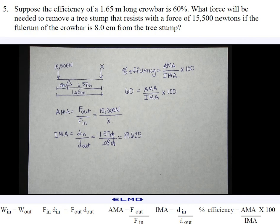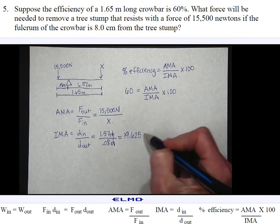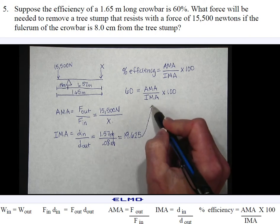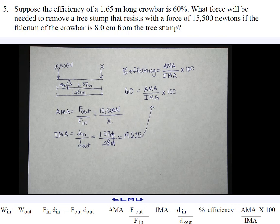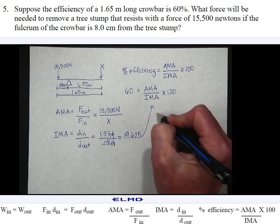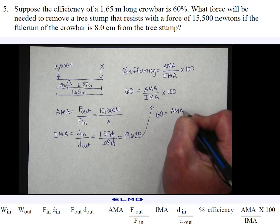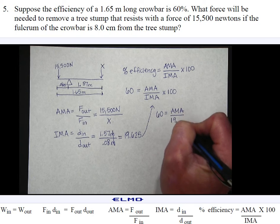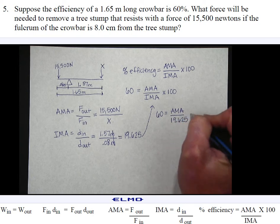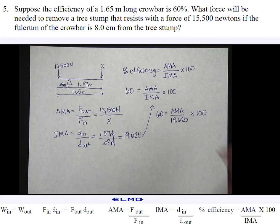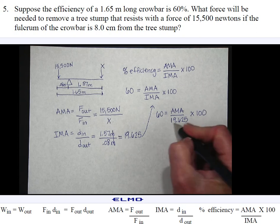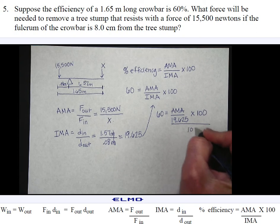Since this is a number that I know, I'm going to plug it in to my formula up here for IMA. So that leads me to 60 equals AMA divided by 19.625 times 100. I'm going to work to solve this for AMA. So to undo times 100, we need to divide both sides by 100.